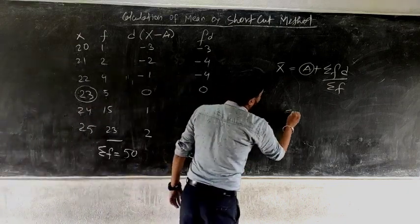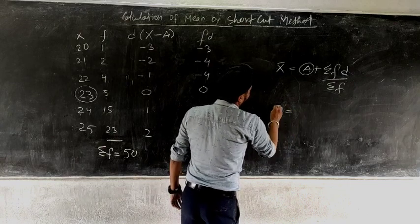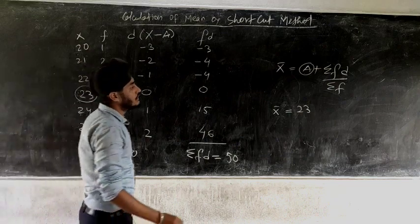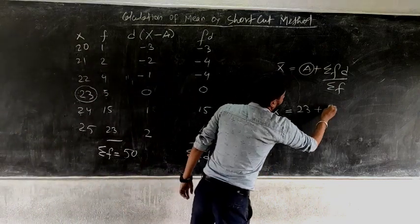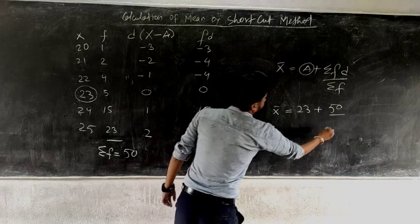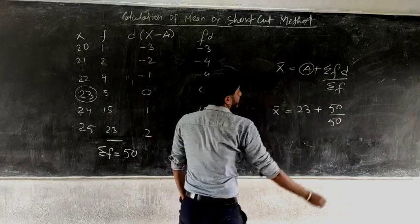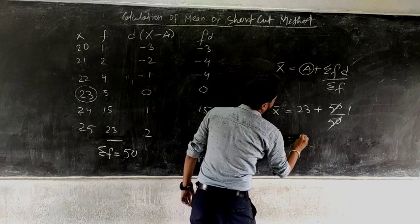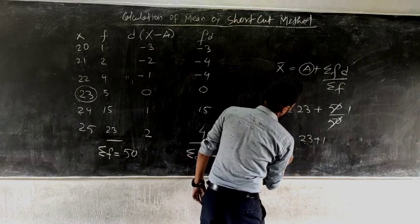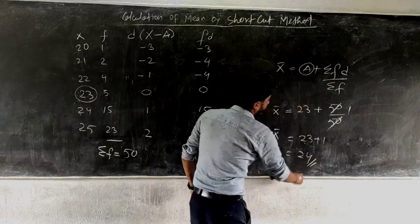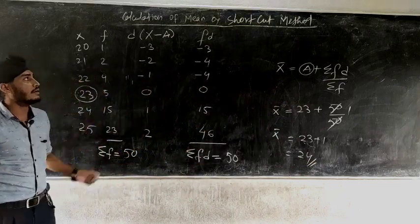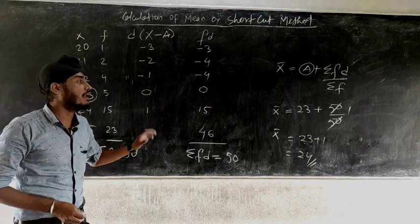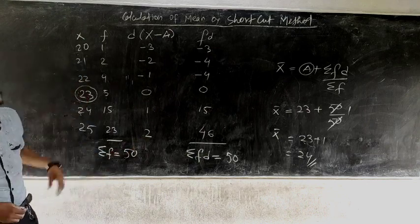Let us substitute the values in the formula. A was 23 (our assumed mean), Σfd = 50 and Σf = 50. Dividing gives 1, so x̄ = 23 + 1 = 24. Remember, when you find mean by direct method or shortcut method the answer is the same — only the formula and working are different.